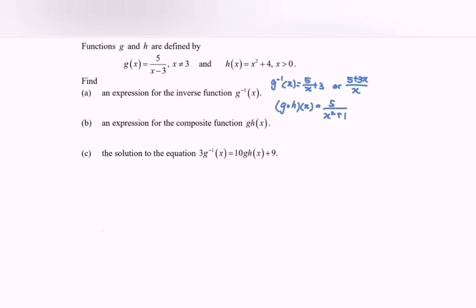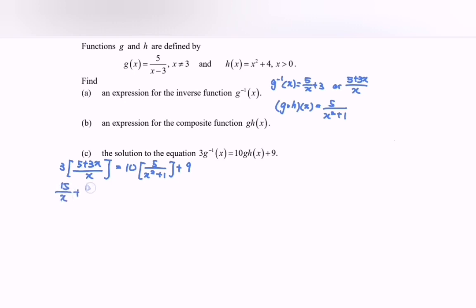Part (c): solve the equation 3 multiplied by g inverse equals 10 multiplied by g∘h. Substituting g inverse as (5 plus 3x) over x, and g∘h as 5 over (x² plus 1), and then plus 9. Expanding: 15 over x plus 9x over x equals 50 over (x² plus 1) plus 9. Notice 15 over x plus 9 equals 50 over (x² plus 1) plus 9. We can simplify the 9 from both sides.